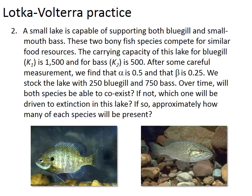Question 2. A small lake is capable of supporting both bluegill and smallmouth bass. These two bony fish species compete for similar food resources. The carrying capacity of this lake for bluegill, K1, is 1500, and for bass, K2, is 500. After some careful measurement, we find that alpha is 0.5 and beta is 0.25. We stock the lake with 250 bluegill and 750 bass.